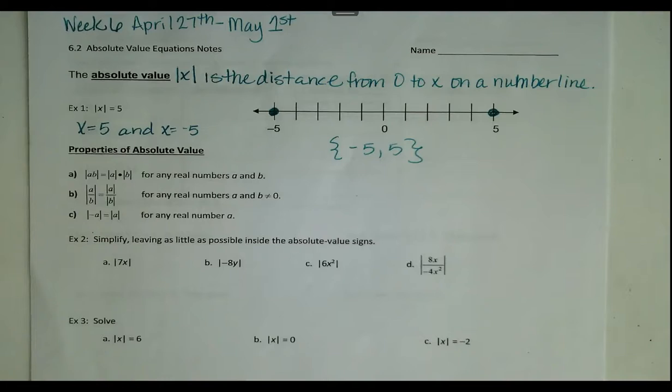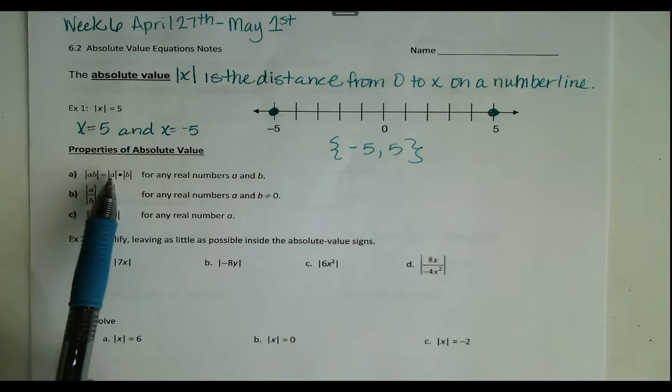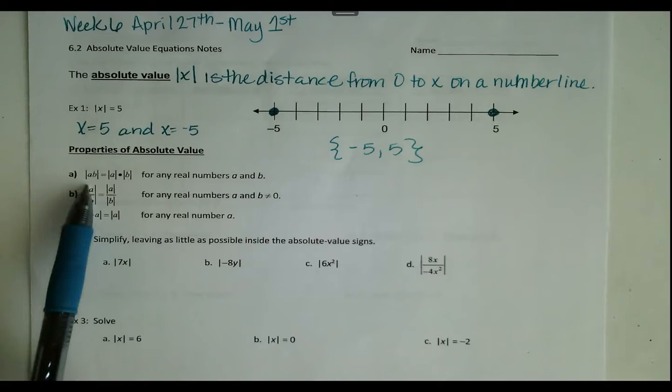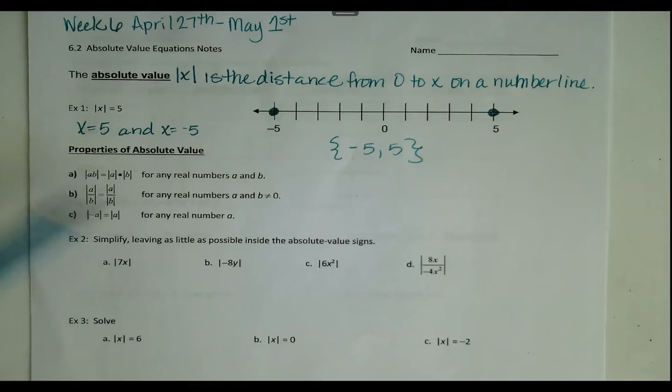Now we're going to go over some properties of absolute value. If you have two numbers, or a number and a variable, being multiplied inside the absolute value bars, it's equal to separating those two and taking the absolute value of each, then multiplying. If you're dividing, the same thing — a fraction inside absolute value bars equals the absolute value of the numerator over the absolute value of the denominator. And the absolute value of a negative number is always equal to the absolute value of its positive counterpart. Those are three properties to keep in mind for the next examples.